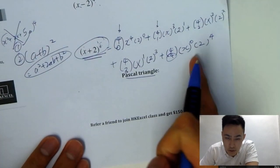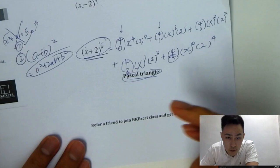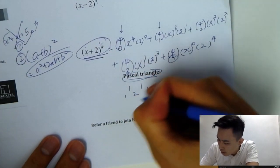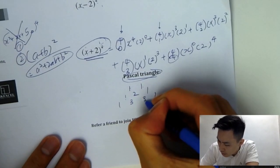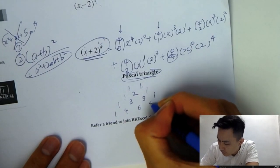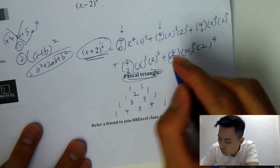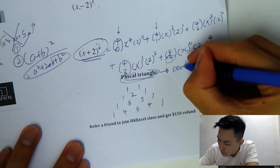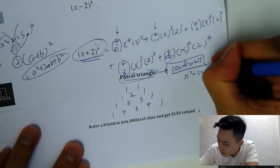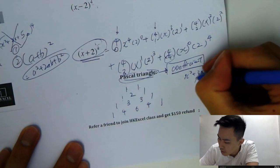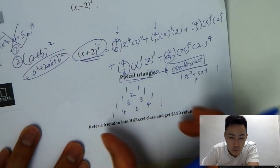That is why we need to learn two things: first, the way to expand using the formula, and second, Pascal's triangle. Pascal's triangle is the way to get the coefficient of the expansion. For example, in x squared plus 3x plus 1, the coefficient of x is 3, and the coefficient of x squared is 1. Pascal's triangle gives you these coefficients simply.